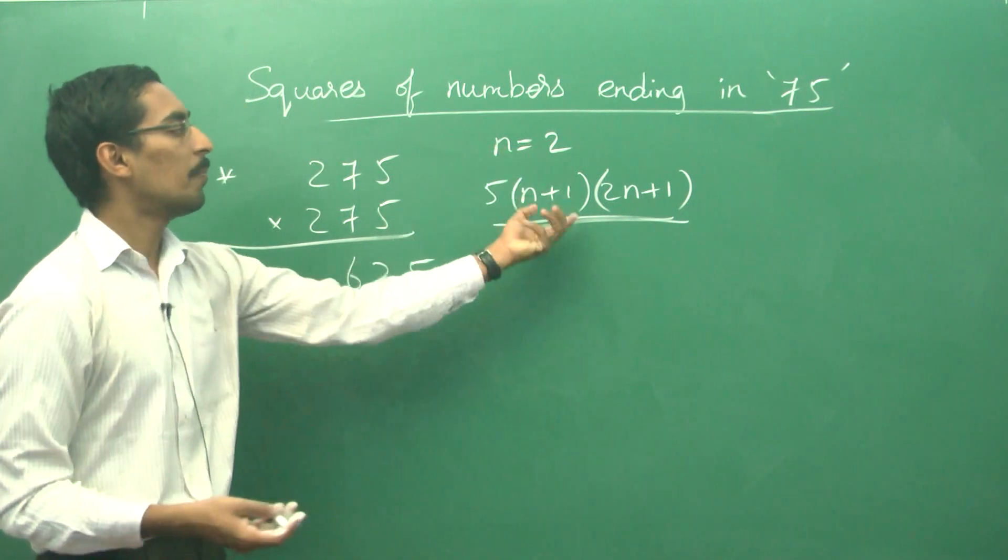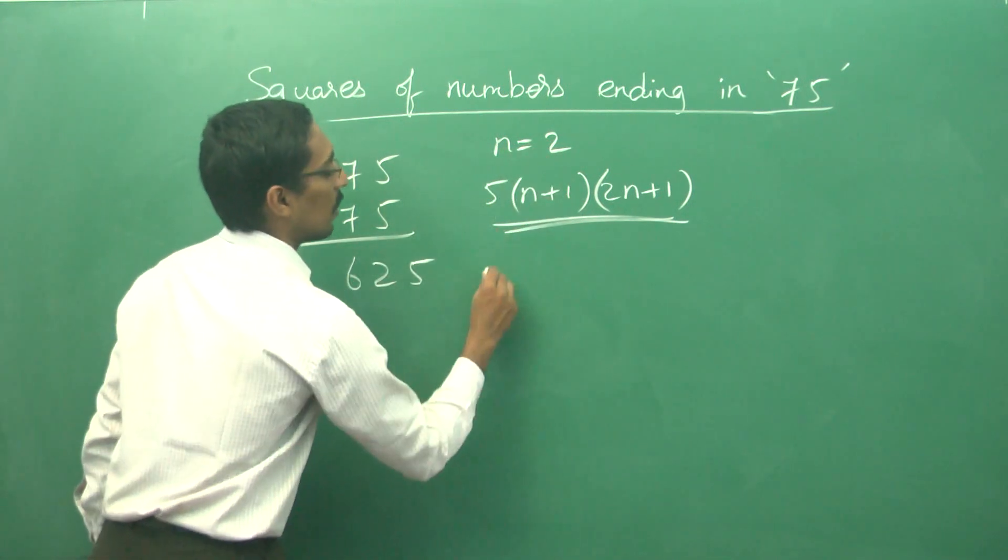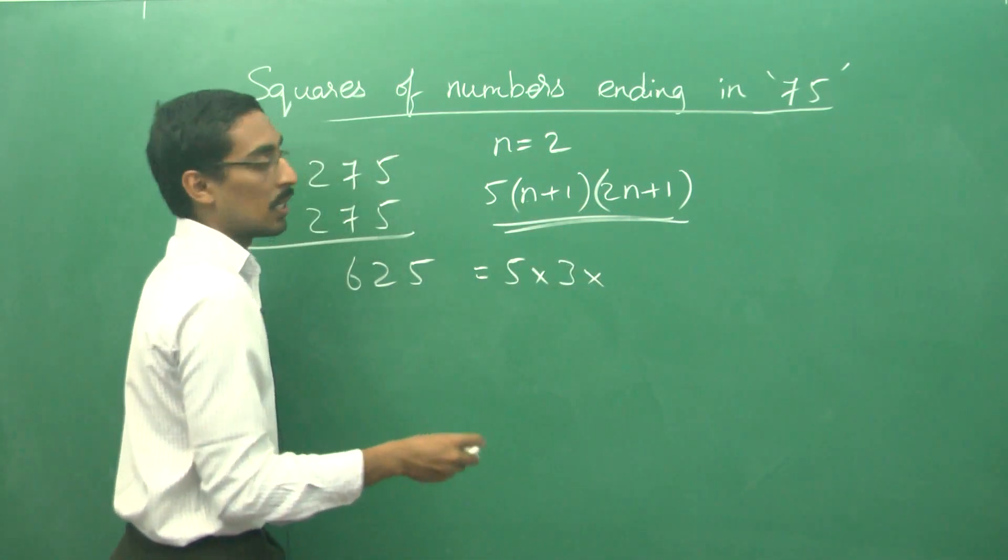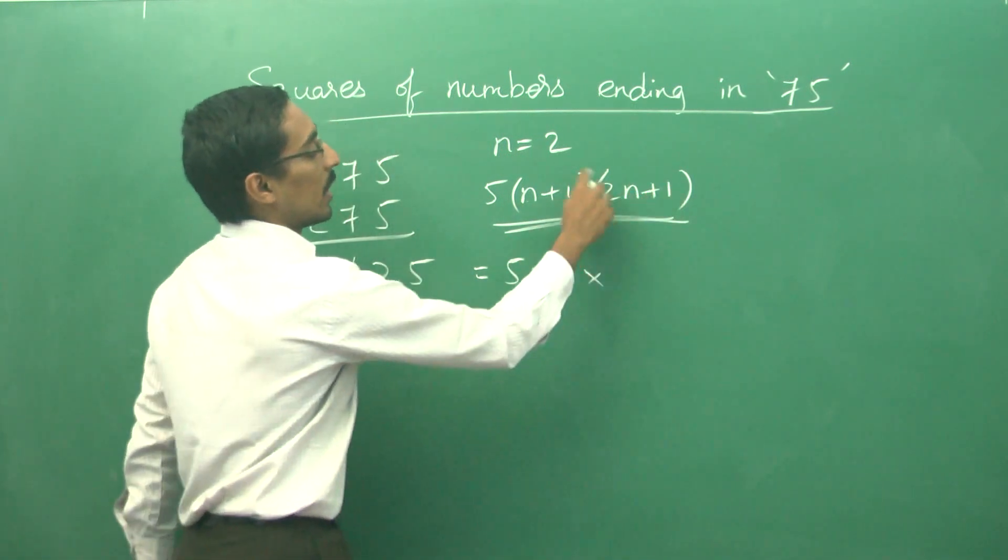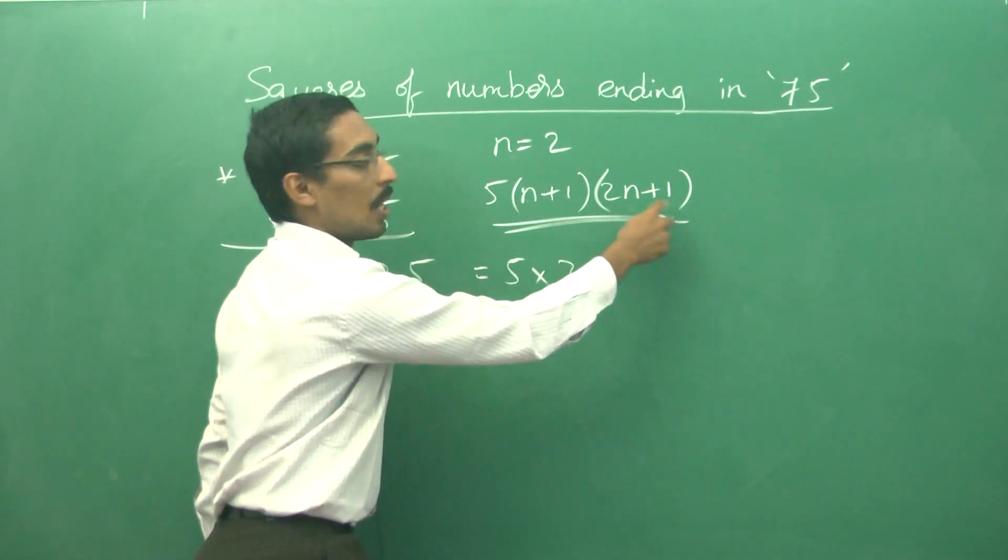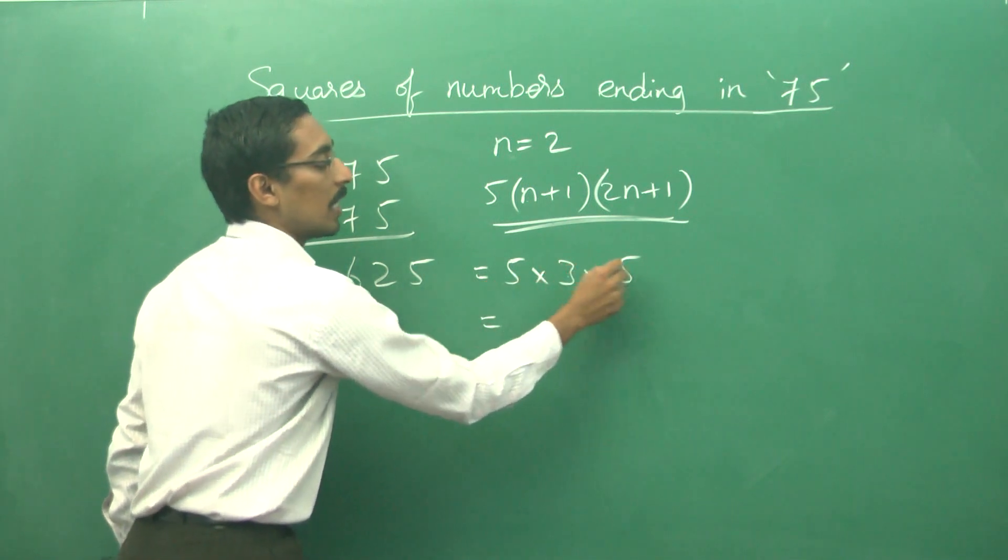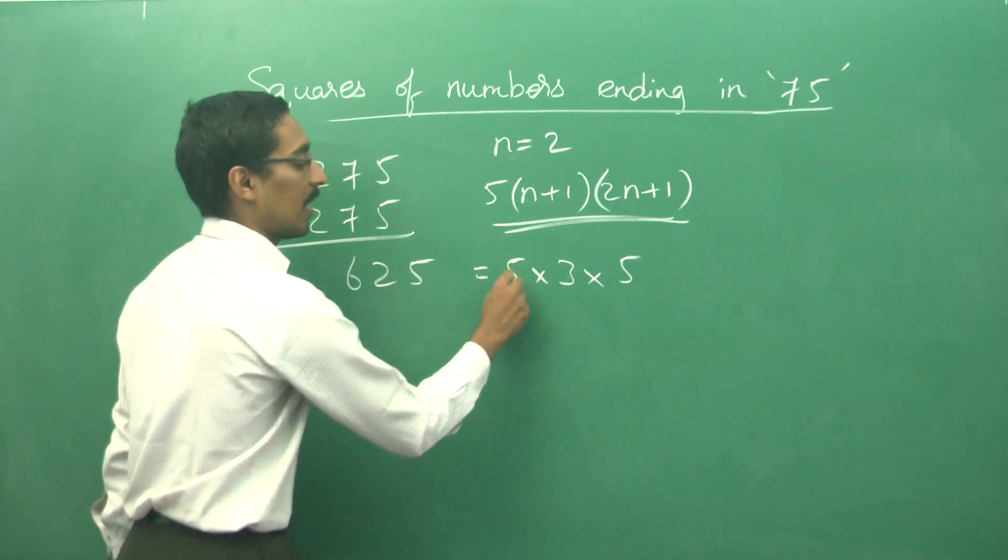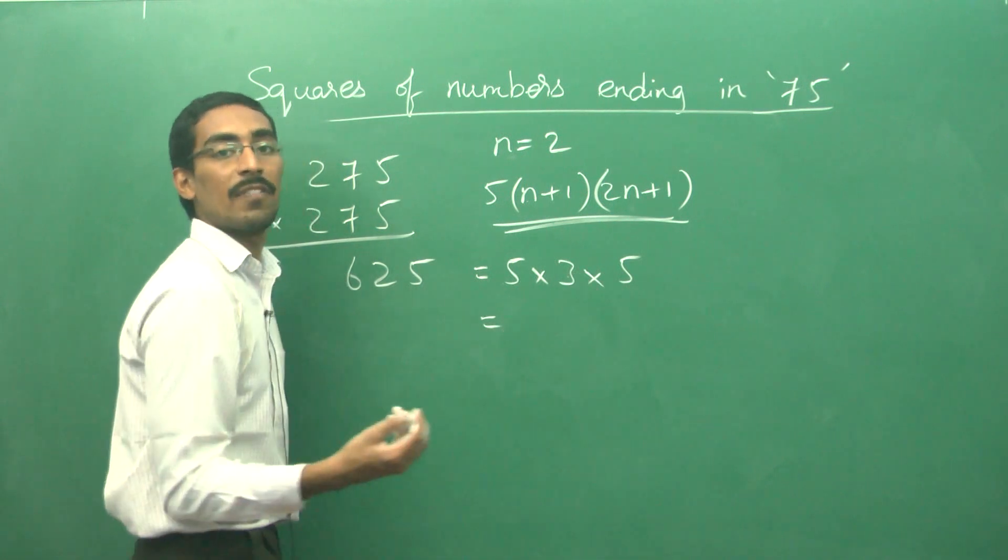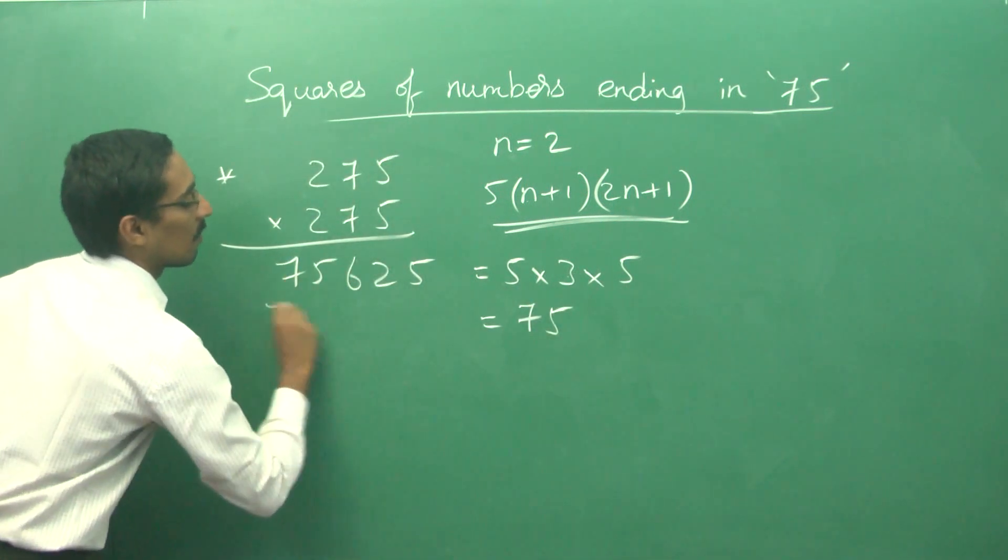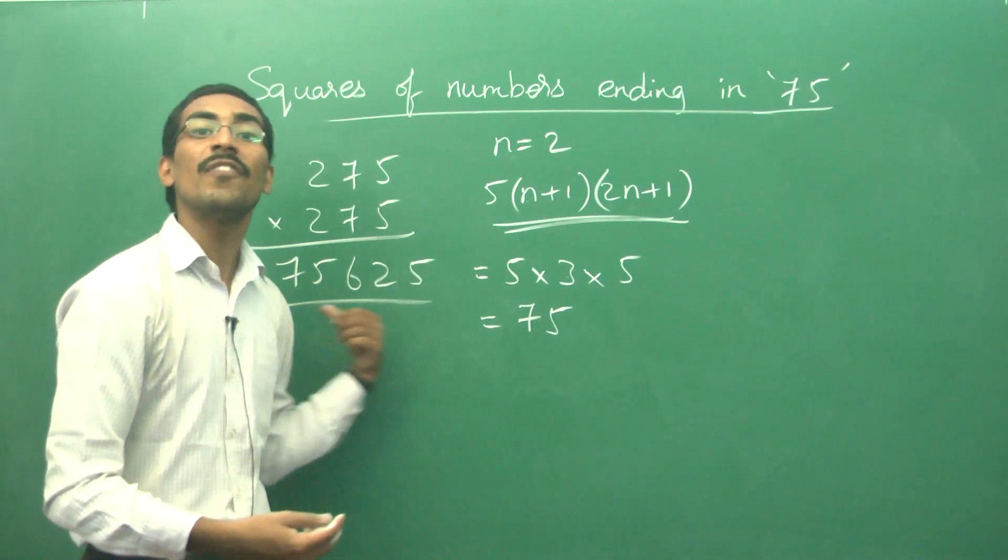Now let us see how to apply that here. Simply put n equal to 2. So this is 5 into 2 plus 1 equals 3. Now how much is 2n plus 1? n is 2, so 2n is 4 plus 1 equals 5. So I have to do 5 into 3 into 5 which is 75. So just write 75 here, so the answer is easily 75,625.